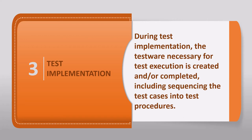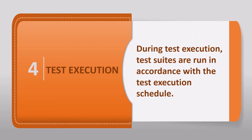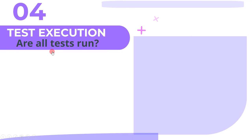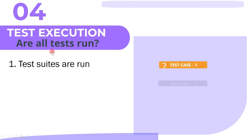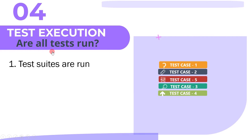After test implementation comes test execution. During test execution, test suites are run in accordance with the test execution schedule. Here we ask: are all tests run? Test suites are a group of test cases or test scripts in a certain order. During test implementation we developed low-level test cases or test scripts; these test scripts are grouped together so they can all be executed at once.